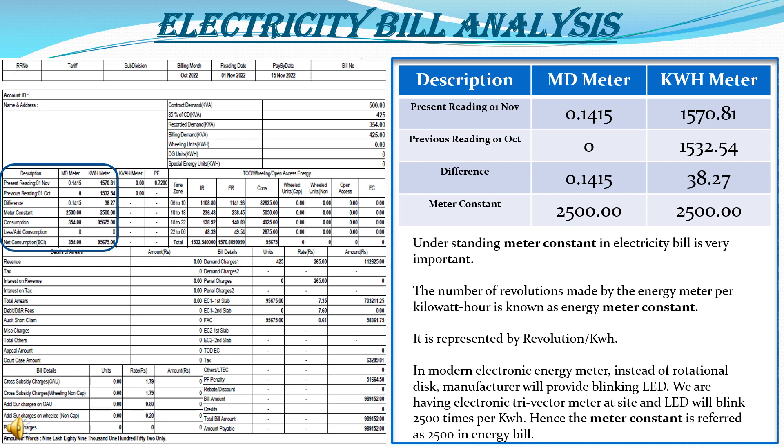The meter constant in both the maximum demand meter and KWH meter is referred as 2500. Understanding the meter constant concept in the electricity bill is very important. The meter constant is the number of revolutions made by the energy meter per KWH, known as the energy meter constant. Every energy meter has a constant — here it is 2500, represented as revolutions per KWH. In a modern electronic energy meter, there are no rotational disks, so instead the manufacturer provides blinking LEDs that blink 2500 times per KWH. Hence the meter constant is 2500 in the energy bill.